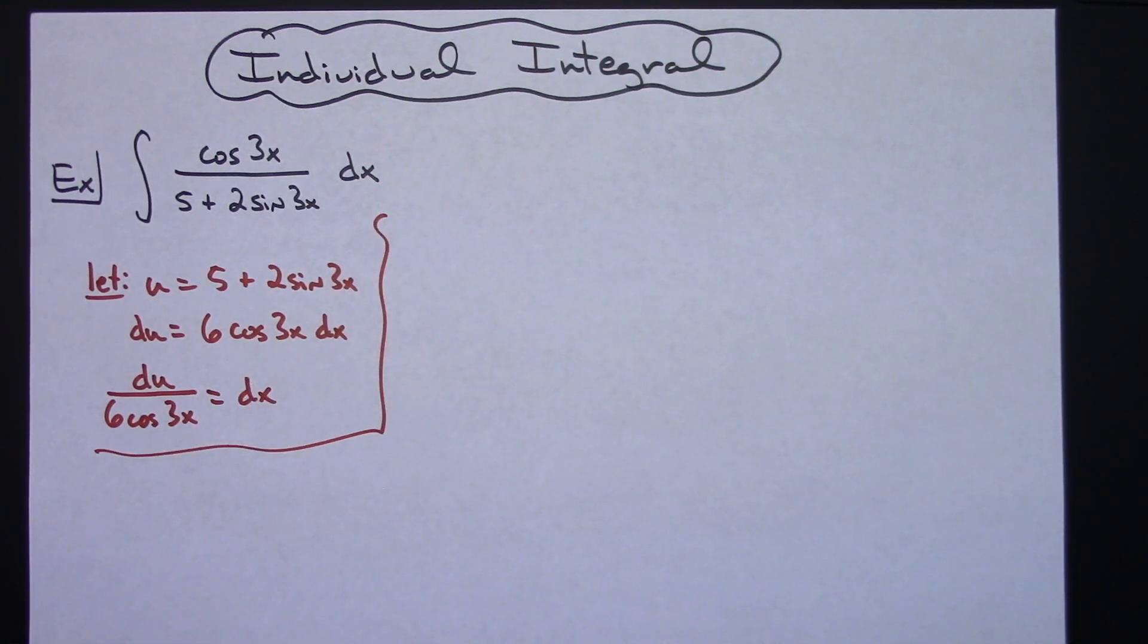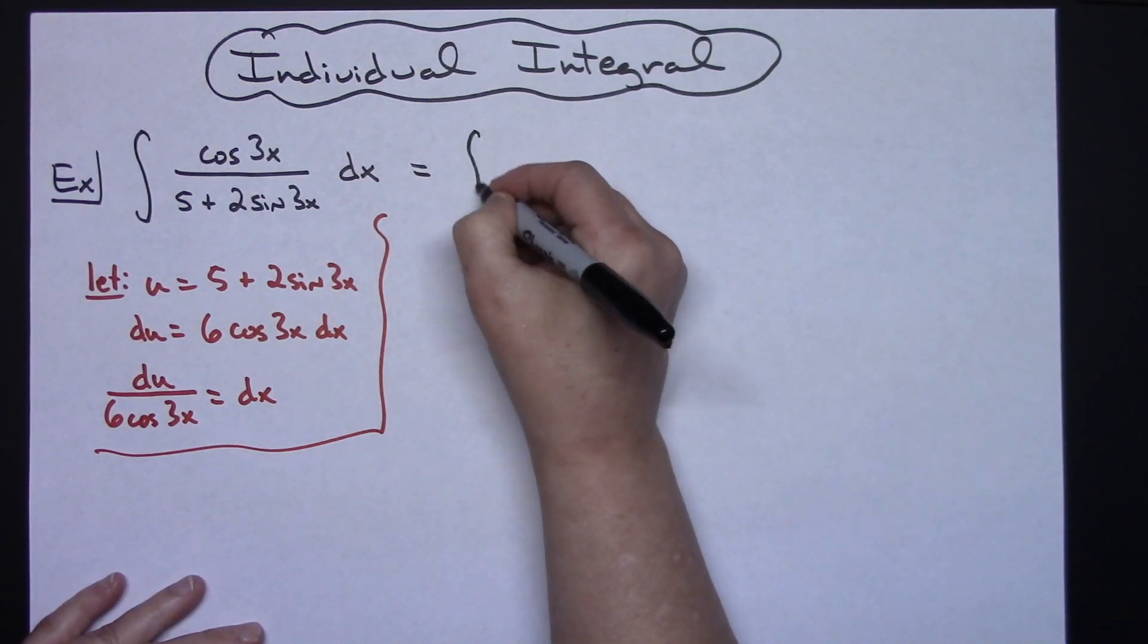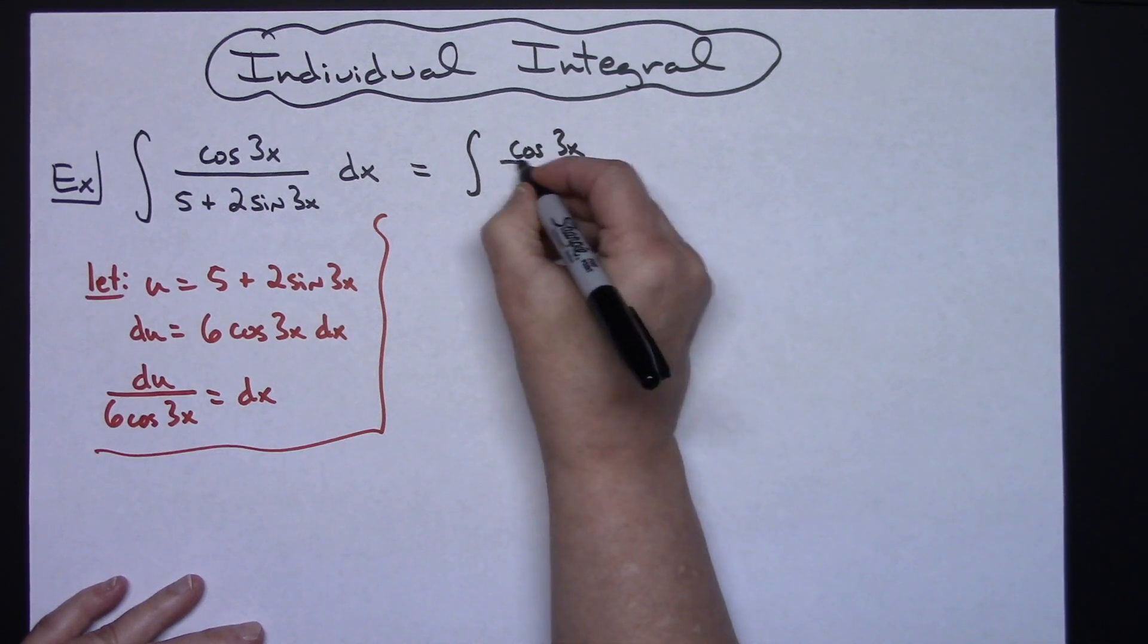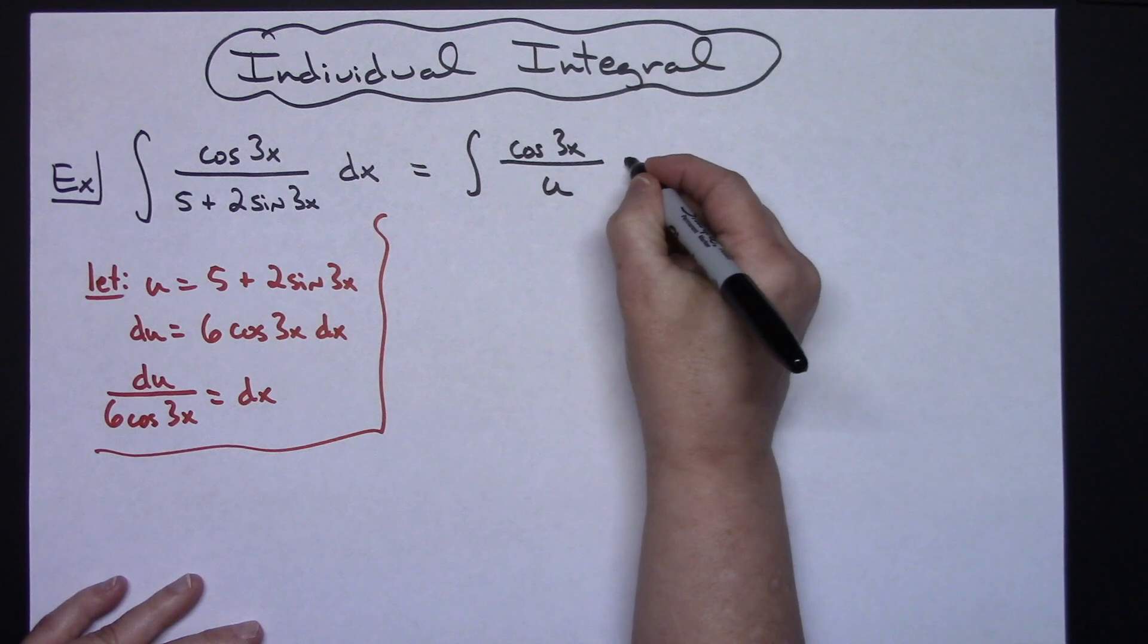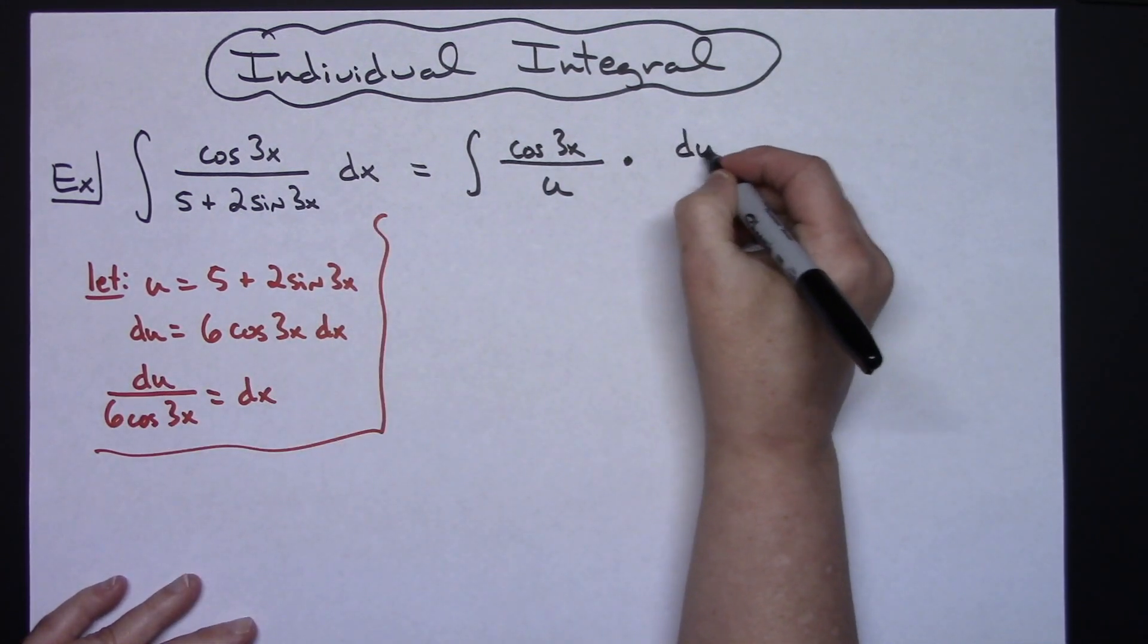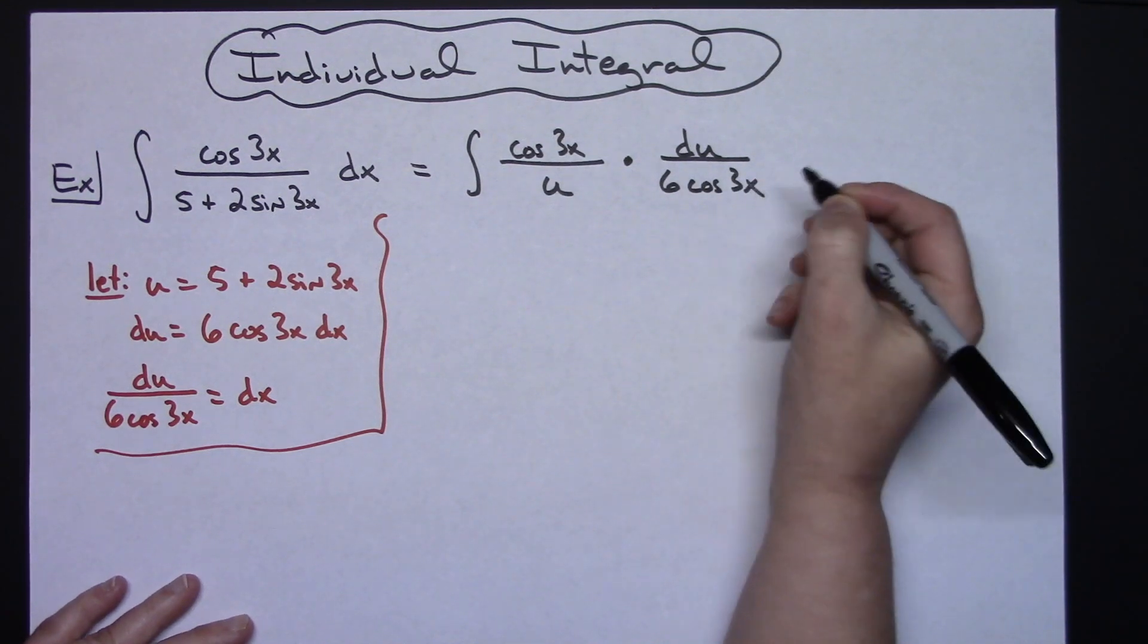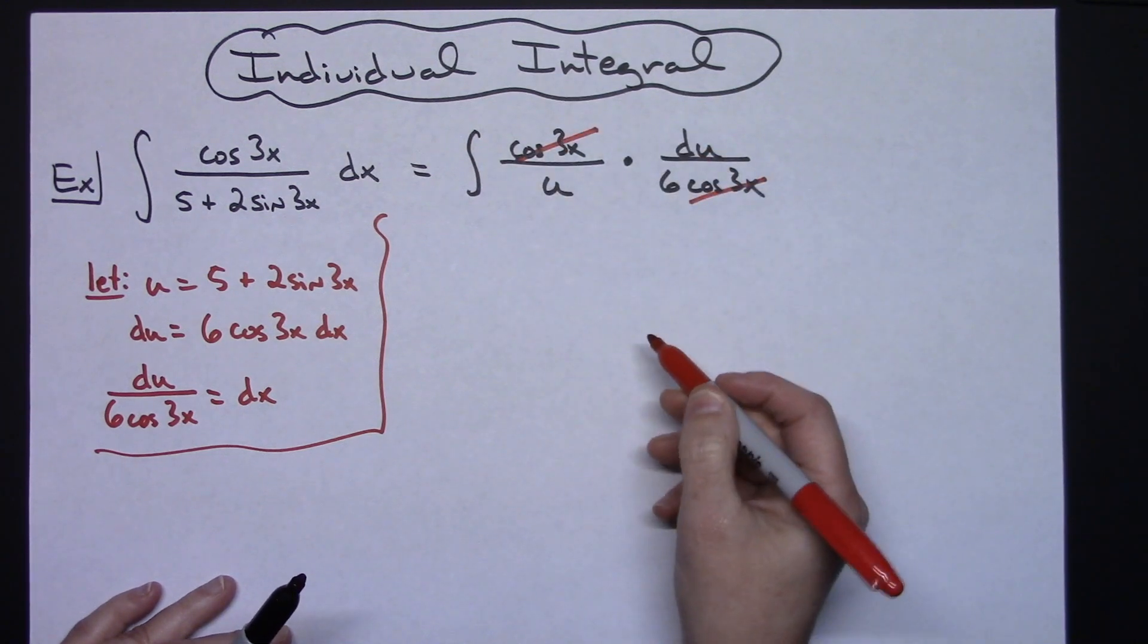After we get done there we'll come back up here to our original problem and we'll do some substituting. So I'll have the integral of cosine 3x in my numerator, replacing that denominator with u, and then replacing the dx with du over 6 cosine 3x. Now those cosine 3x's are going to cross out real nicely.